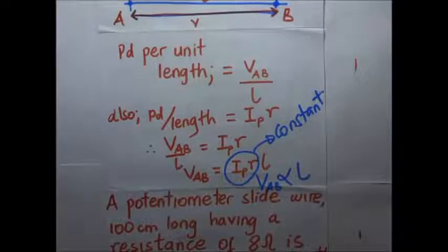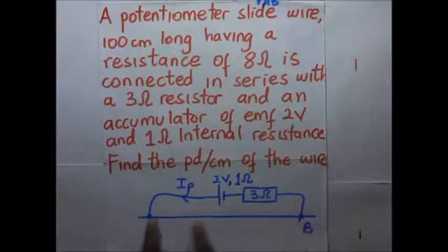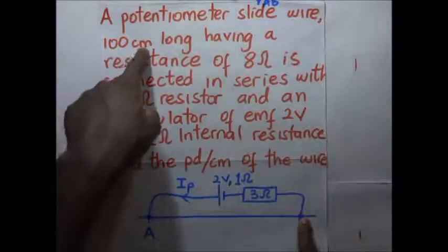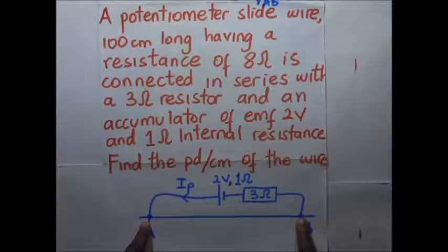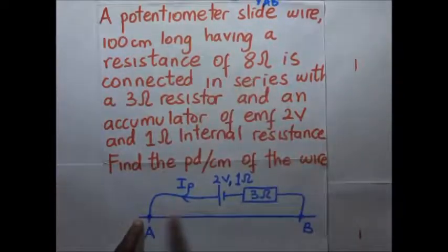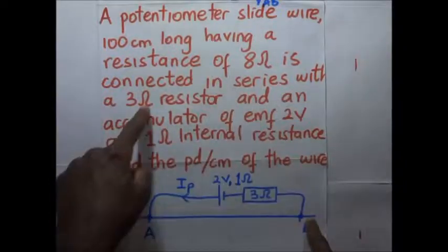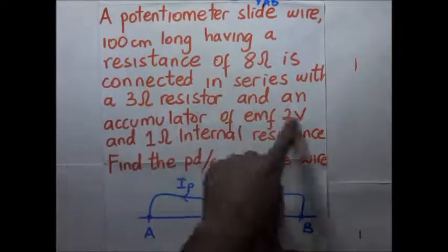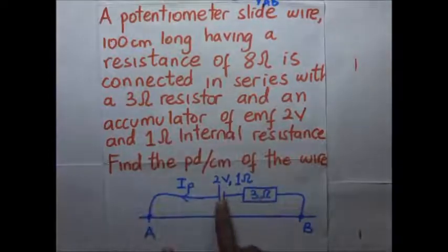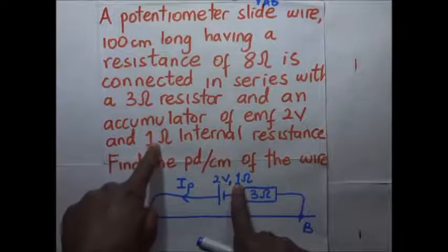Now let's work through an example. A potentiometer wire AB is 100 centimeters long and has a resistance of 8 ohms. It is connected in series with a 3-ohm resistor and an accumulator of EMF 2 volts with an internal resistance of 1 ohm. We are asked to find the PD per unit length of the wire.